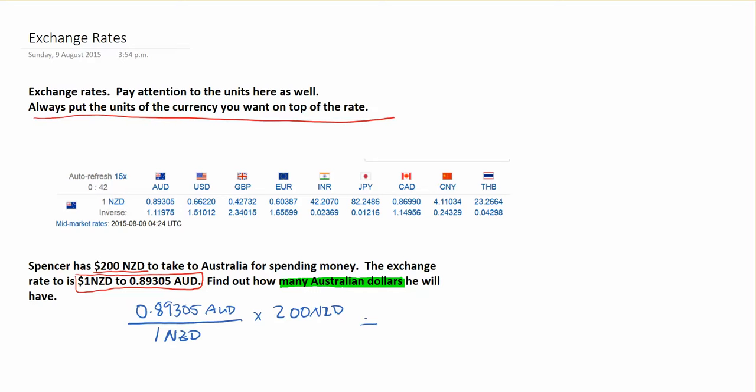So 200 times 0.89305 gives us 178.61 Australian dollars. That reflects the idea that the Australian dollar is worth more than the New Zealand dollar — if you travel with 200 New Zealand dollars, you'll actually have fewer Australian dollars to spend.